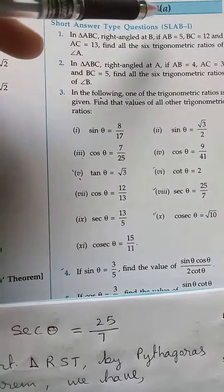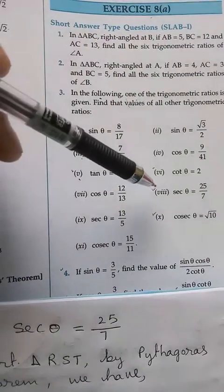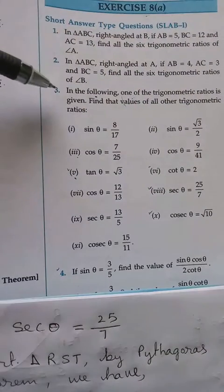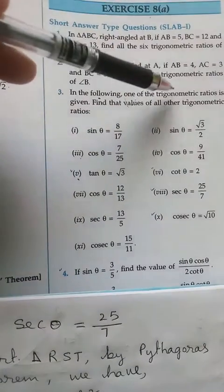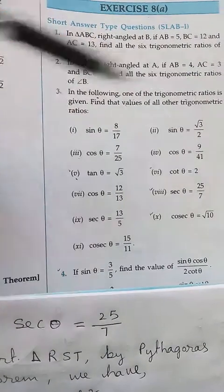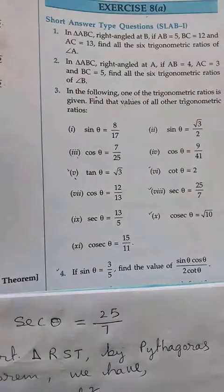Today let us do exercise 8A question number 8. If you see the question carefully, they give us one of the trigonometric ratios then we have to find the remaining trigonometric ratios.